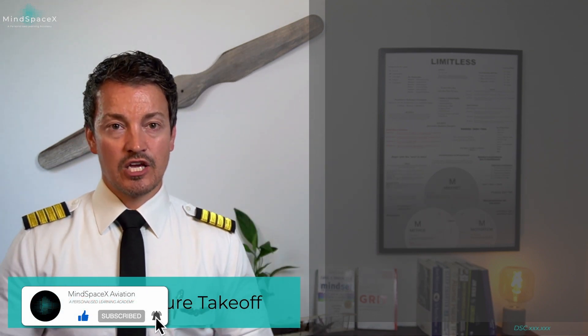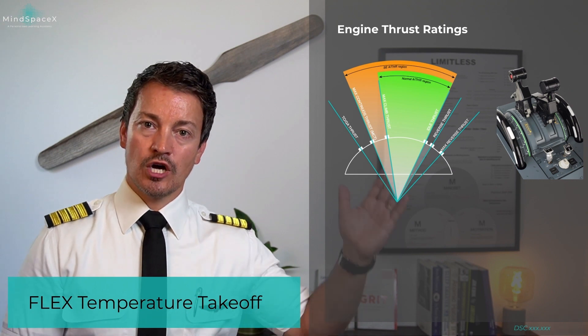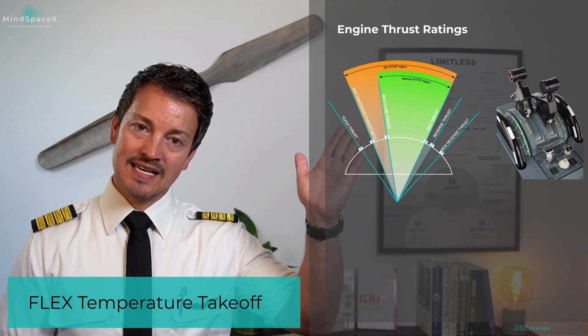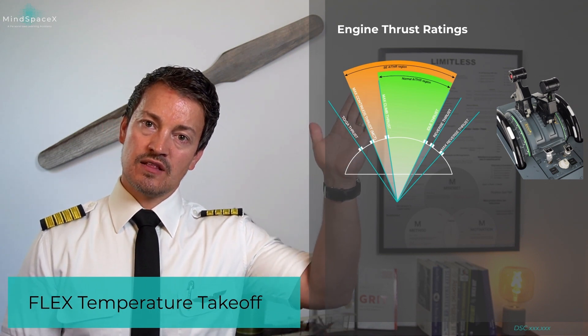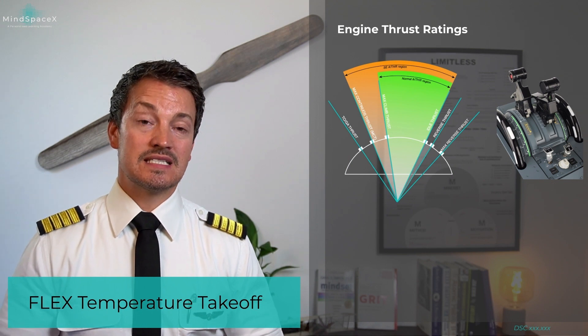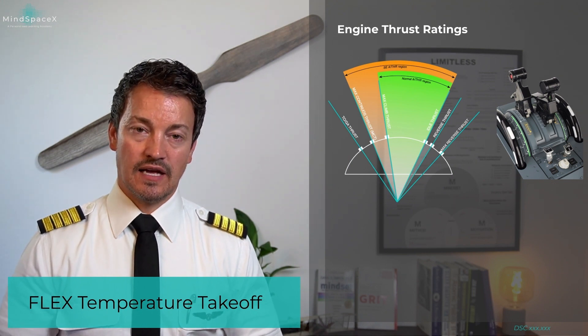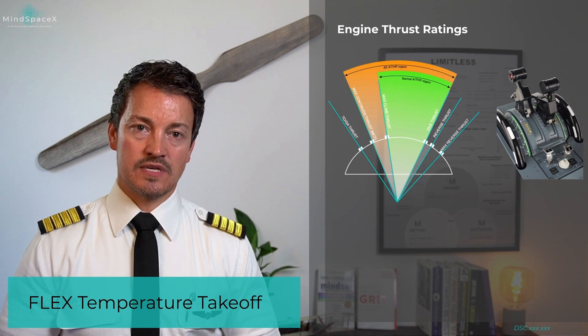The other reduced power takeoff, which is much more commonly used across almost all operators, is flexible temperature takeoff. A flexible temperature takeoff does not use the TOGA detent anymore for the takeoff power set. You're putting the thrust lever when you take off to the flex MCT detent, and it will then use the value you have set in the MCDU.